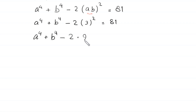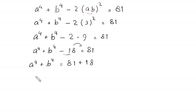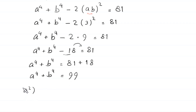Since 3 squared is 9, we get a to the power 4 plus b to the power 4 minus 2 times 9 equals 81. That gives a to the power 4 plus b to the power 4 minus 18 equals 81, so a to the power 4 plus b to the power 4 equals 81 plus 18, which is 99.